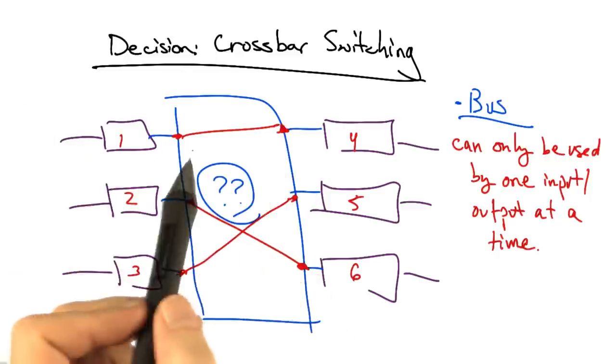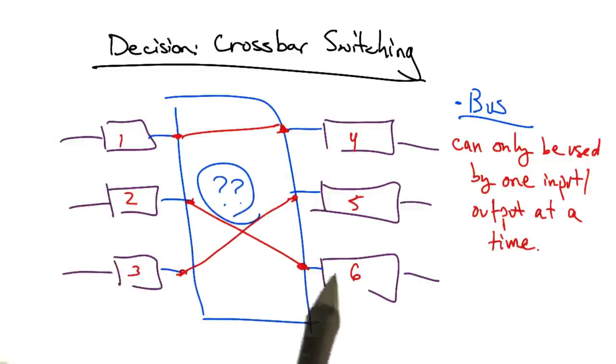For example, one should be able to send to four, two to six, and three to five, all in the same time slot.